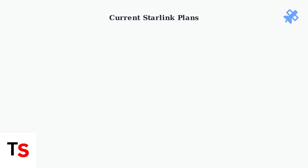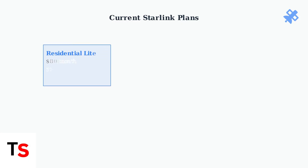Starlink offers several plan options with different features and costs. Understanding these differences helps you choose the right service for your needs. Residential Light is Starlink's most affordable option at $80 per month. This plan offers download speeds between 50 and 100 megabits per second, making it suitable for basic Internet needs.